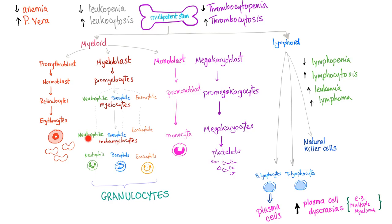We have neutropenia if neutrophils are low, and neutrophilic leukocytosis if they are high in number. Then we go to the platelets: fewer platelets is thrombocytopenia, and lots of platelets is thrombocytosis.